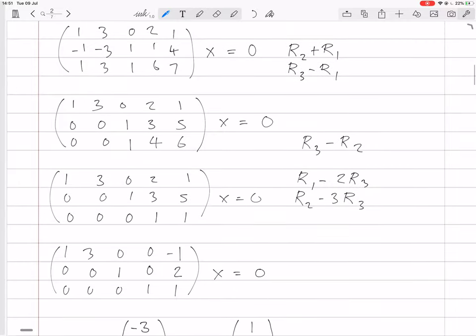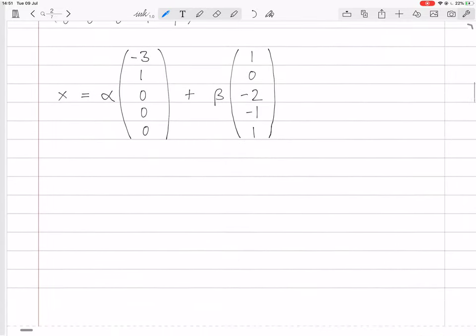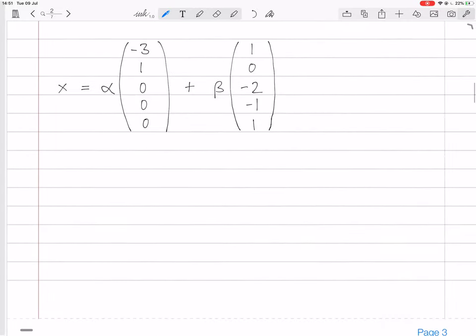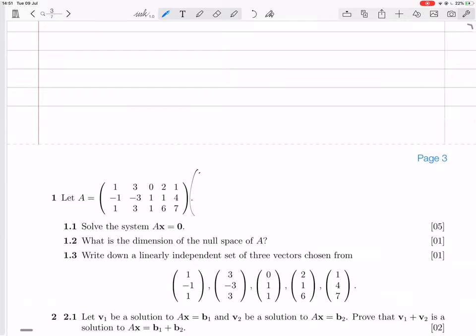We can just check it quickly. If you take this vector A and multiply it by this vector -3, 1, 0, 0, 0, what do you get? You get 0. You get 3 minus 3. It's all very easy. You get -3 plus 3, -3 plus 3. Yes, you get 0. Cool.